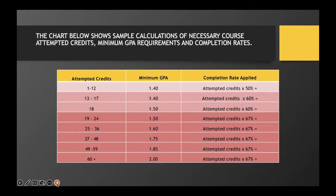The second column has the minimum GPA that you must meet at each attempted credit threshold. And finally, the last column is the completion rate that has to be met in order to stay in good academic standing.